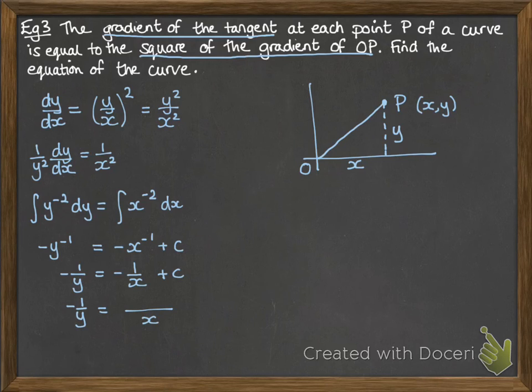So if we put it all over a common denominator of x, then we'll have minus 1 plus cx over x is equal to minus 1 over y. Now if we get rid of that negative, that looks like this.